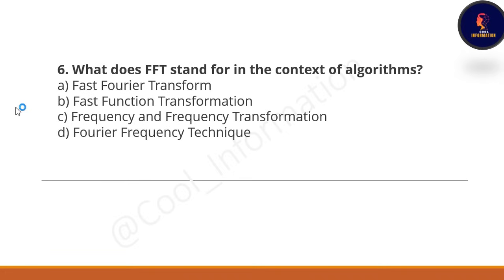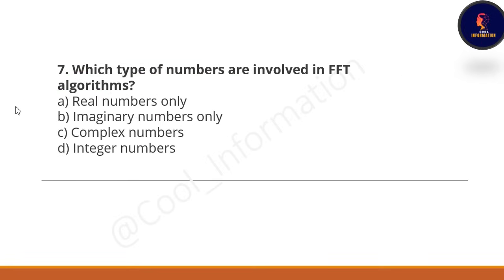Next question: what does FFT stand for in the context of algorithms? Option A is fast Fourier transform, Option B is fast function transformation, Option C is frequency and frequency transformation, and Option D is Fourier frequency techniques. The correct option is Option A — fast Fourier transform is the full form of FFT in the context of algorithms.